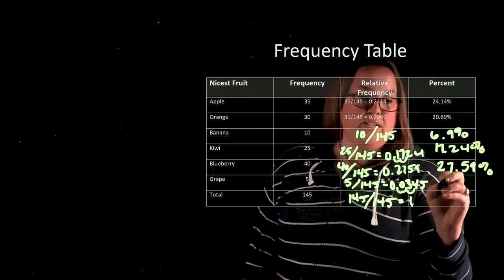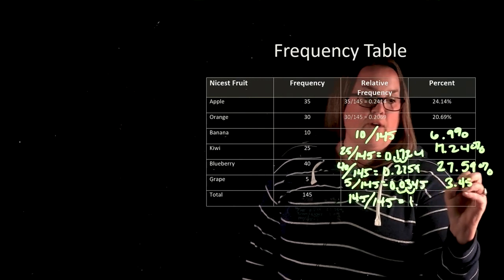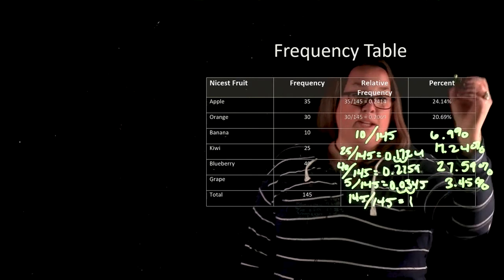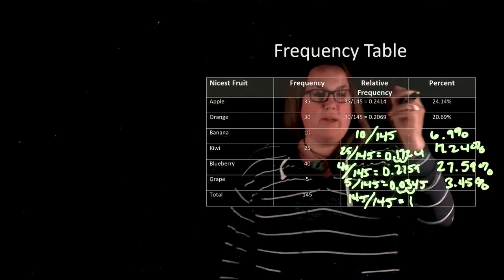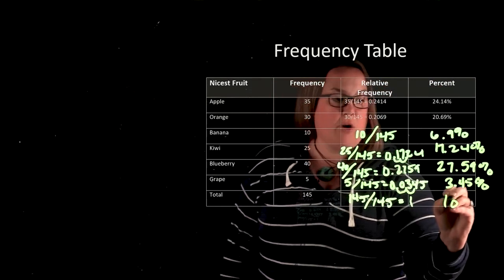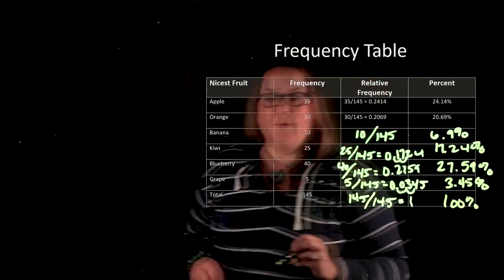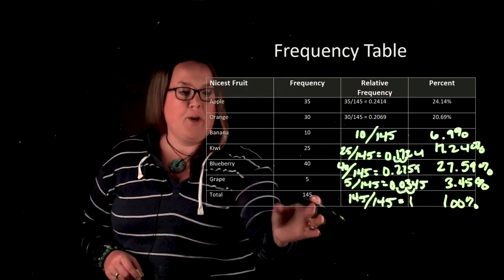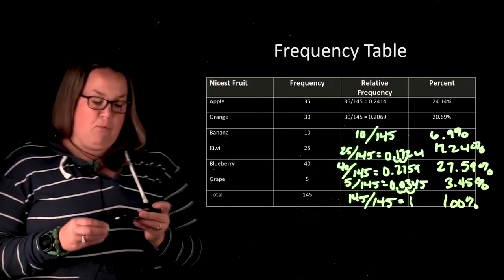Then here if I multiply this by 100 I'm moving it two places, so I have 3.45 percent. So again this column, because of the way that these measurements work, this should always sum to 100 percent, just like this would sum to 1 because this is the total of 145.